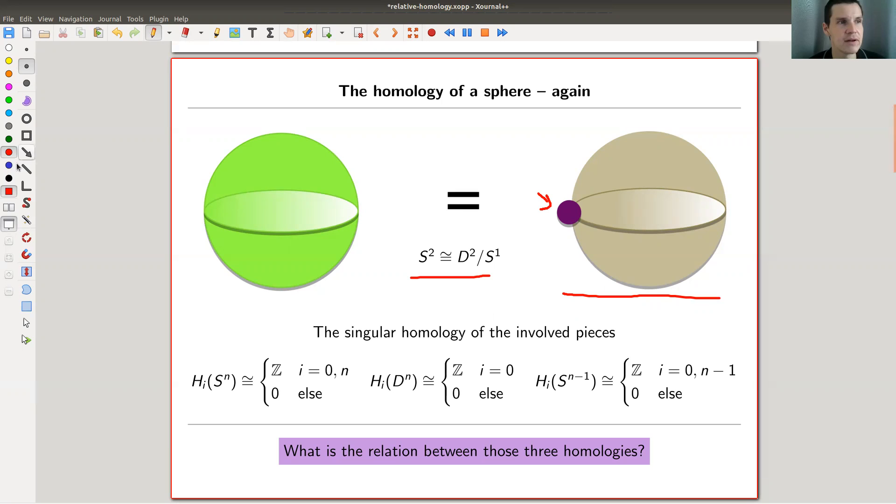Singular homology associates homology to all sorts of pieces with homology for S^n, homology for S^(n-1). So homology here and homology here. And of course, we also have homology for a disk. And the main question is, how are those related? In other words, how are taking quotient procedures reflected in homology?